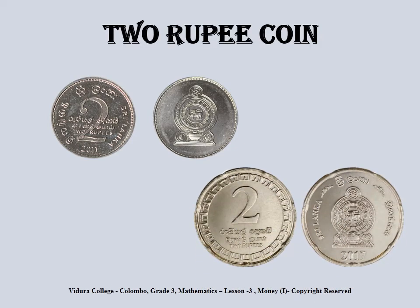Now what is this coin? It is the two rupee coin. As you can see on the head's side, it is the national emblem, and on the tail's side, it is the value of the coin.